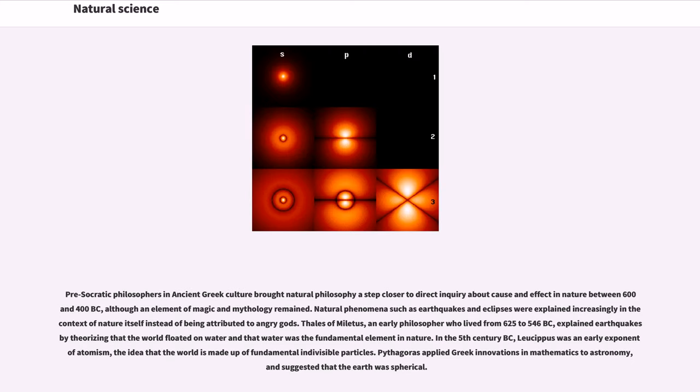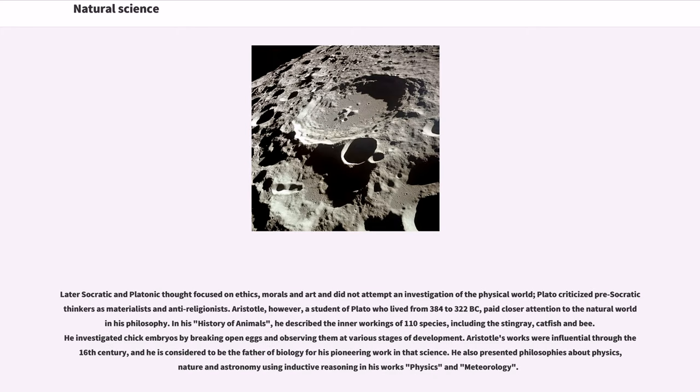Pre-Socratic philosophers in ancient Greek culture brought natural philosophy a step closer to direct inquiry about cause and effect in nature between 600 and 400 BC, although an element of magic and mythology remained. Natural phenomena such as earthquakes and eclipses were explained increasingly in the context of nature itself instead of being attributed to angry gods. Thales of Miletus, an early philosopher who lived from 625 to 546 BC, explained earthquakes by theorizing that the world floated on water and that water was the fundamental element in nature. In the 5th century BC, Leucippus was an early exponent of atomism, the idea that the world is made up of fundamental indivisible particles. Pythagoras applied Greek innovations in mathematics to astronomy, and suggested that the earth was spherical. Later Socratic and Platonic thought focused on ethics, morals and art and did not attempt an investigation of the physical world.